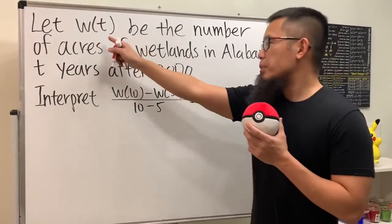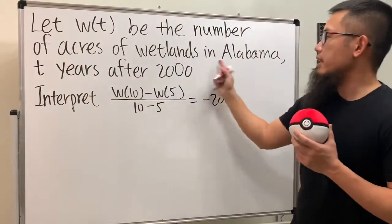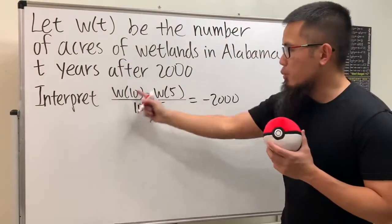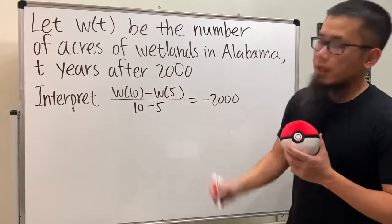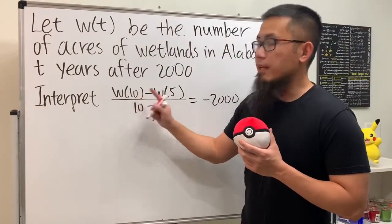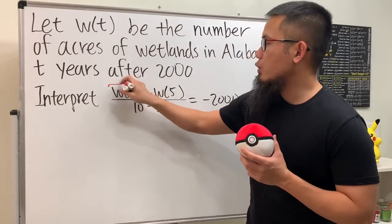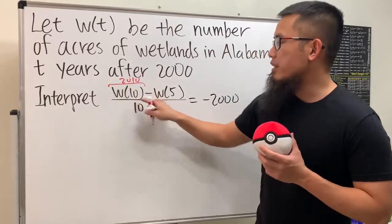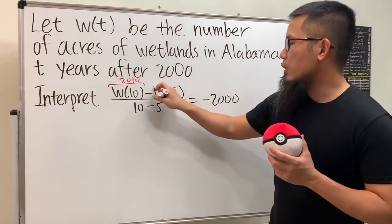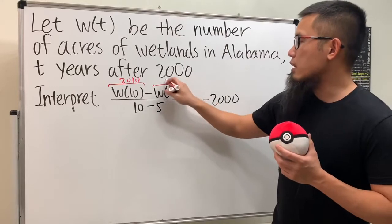This question says: let w of t be the number of acres of wetlands in Alabama, t years after 2000. We are going to interpret this. We have w of 10 — in this case t is equal to 10, so that means we are talking about the year 2010 because it's 10 years after 2000. Similarly, w of 5 means we are talking about five years after 2000, so it's the year 2005.